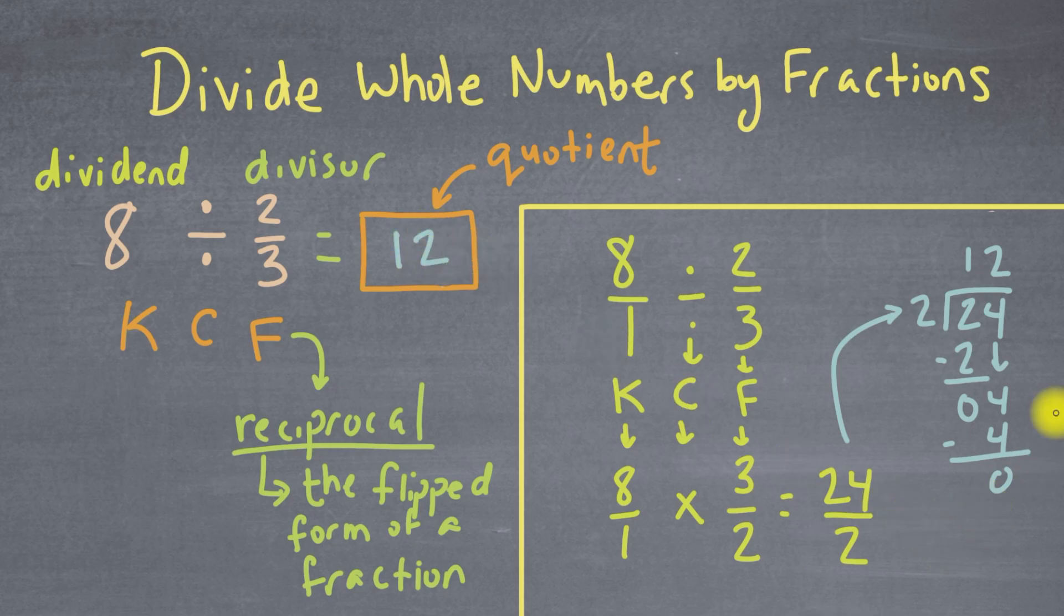Since there's no remainder, we won't have a fractional part of a mixed number. It's just going to be 12 whole. So therefore, again, 8 divided by 2/3 equals 12.